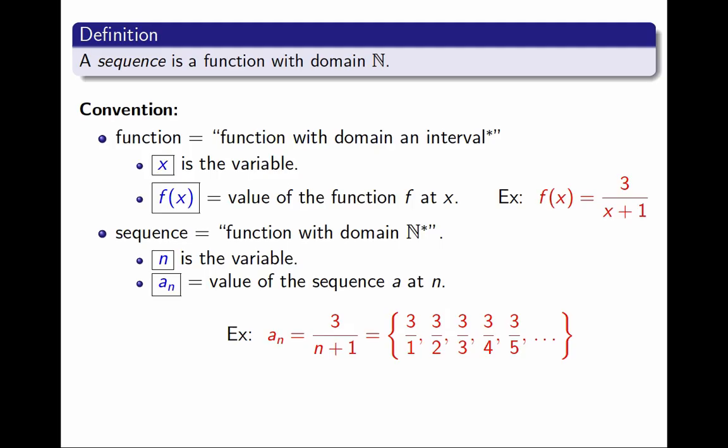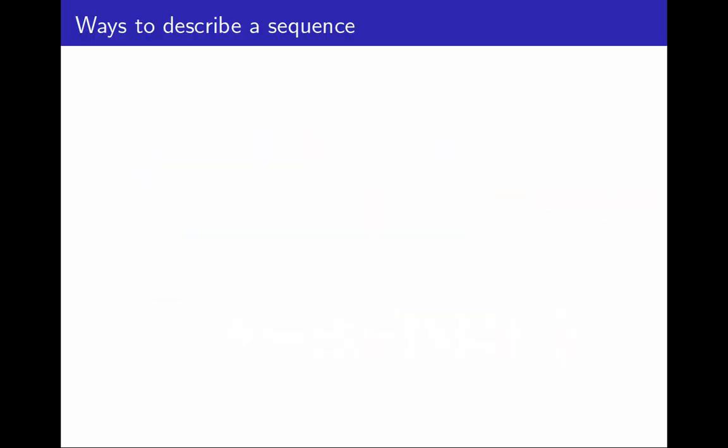There are various ways to define a sequence. We could describe a sequence with an equation, perhaps it's the most common. Here is an example. In this case, a sub n equals 2 to the n times n factorial over n plus 1. This is definitely a sequence, because the factorial is only defined for natural numbers.